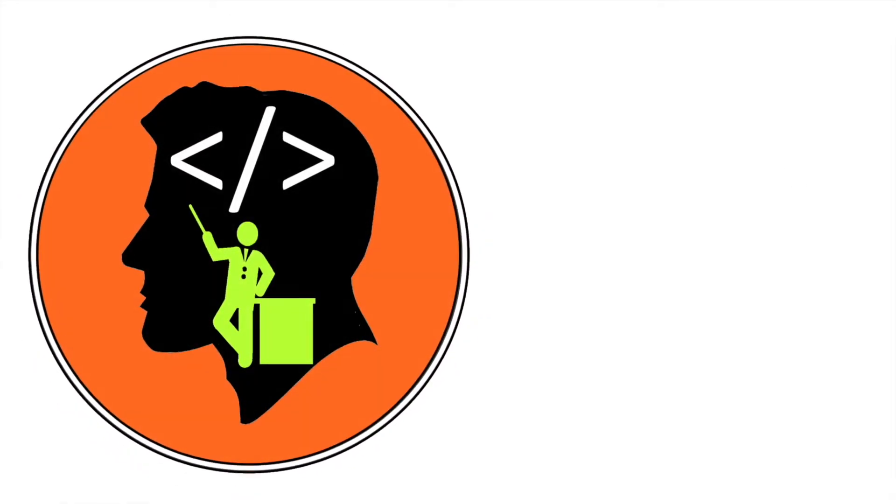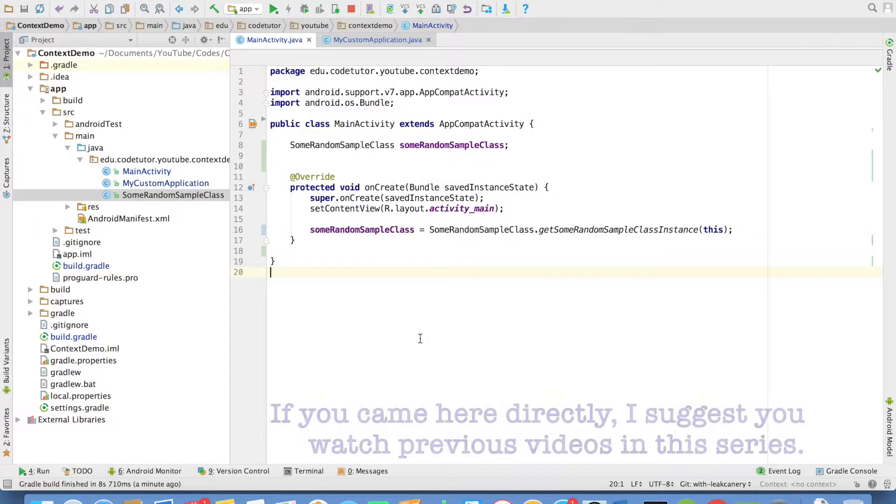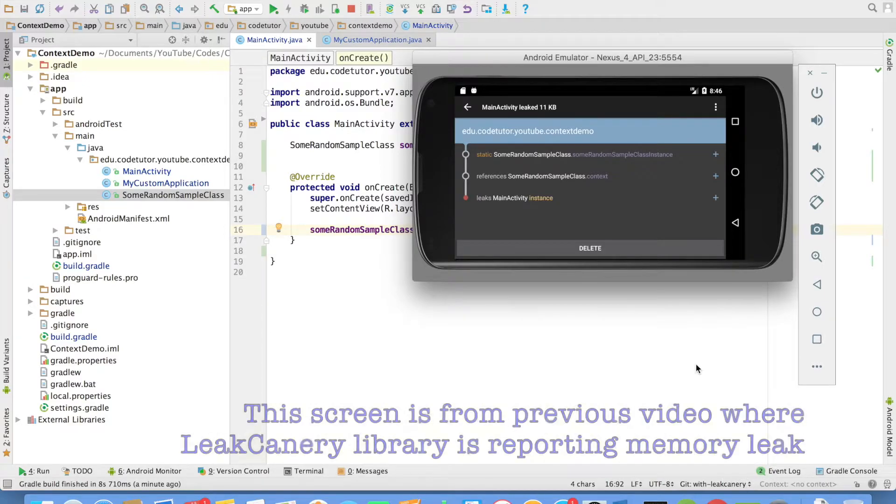Hi guys, CodeTutor here and my name is Anil Deshpande. Well in the previous video, we have seen that this particular line of code was causing memory leak. How to avoid this?